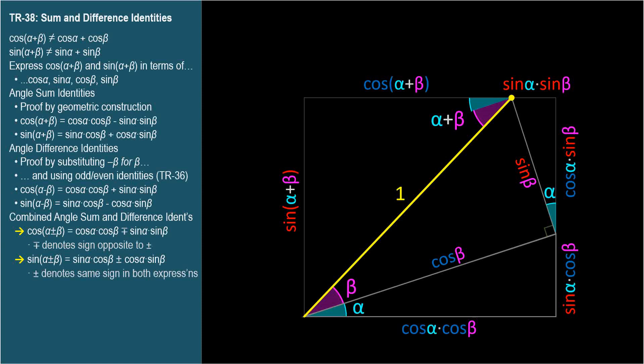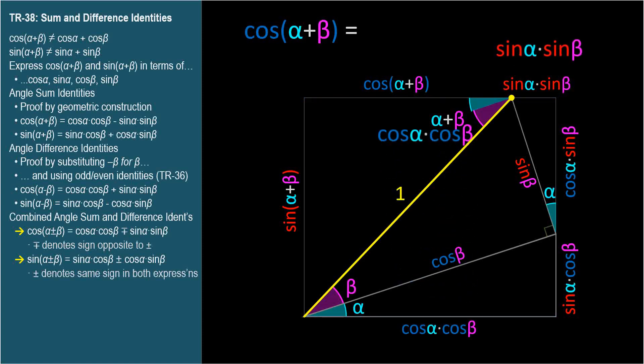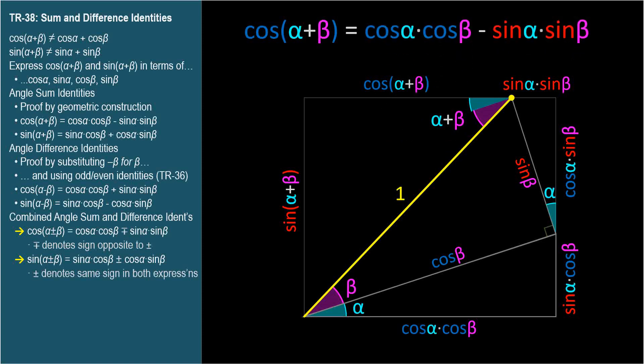Now we have everything we need. This segment at the top is cosine(alpha plus beta), which is the term we want to solve for. Its length equals the length at the bottom, cosine alpha times cosine beta, minus the length at the top, sine alpha times sine beta. So cosine(alpha plus beta) equals cosine alpha cosine beta minus sine alpha sine beta.